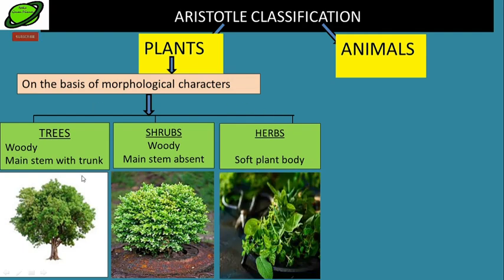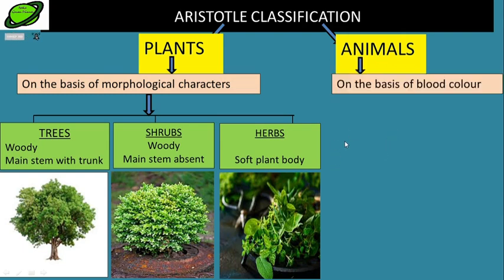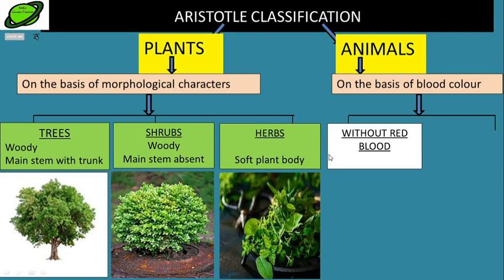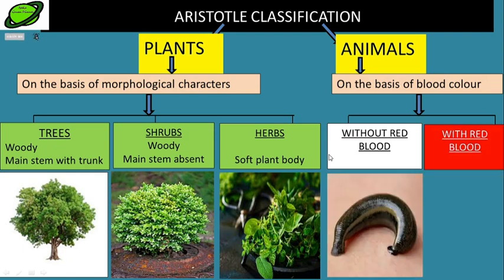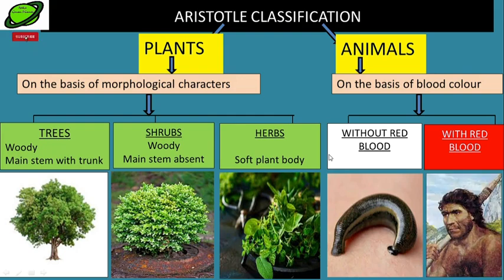Apart from plants, Aristotle also classified animals on the basis of blood color. He noted two kinds of animals: first, those without red blood, and second, those with red blood. This was the classification given by Aristotle.